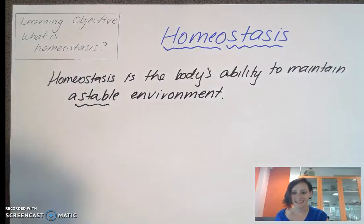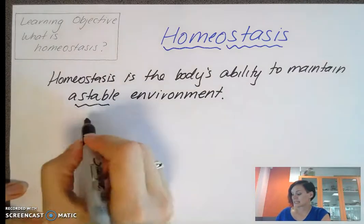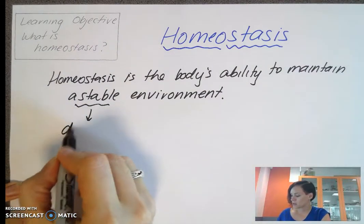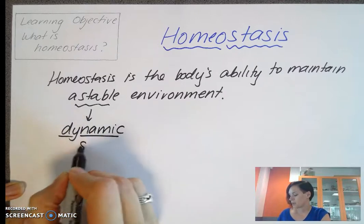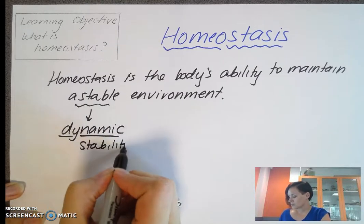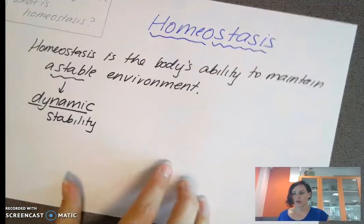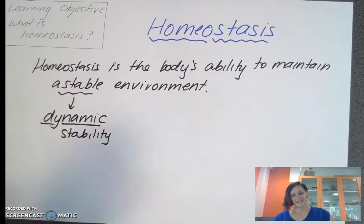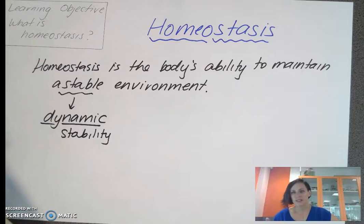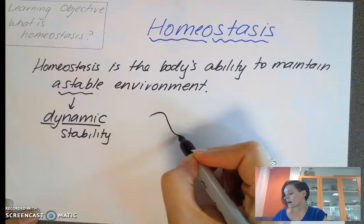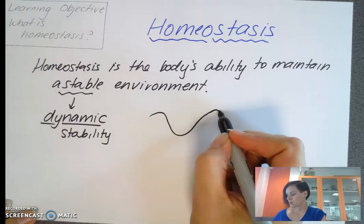We talk about dynamic stability, which is about how things may go up and down a little bit — it doesn't have to stay exactly the same. For example, your blood sugar is never always the same, but your body is always trying to keep it from going too far down or too far up.